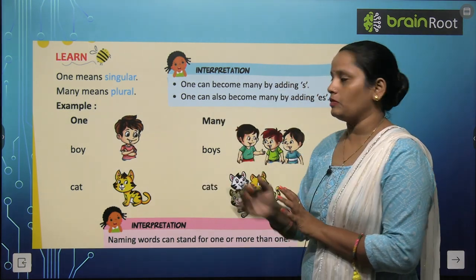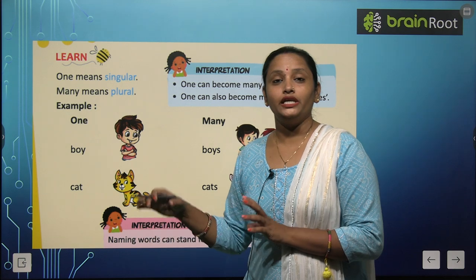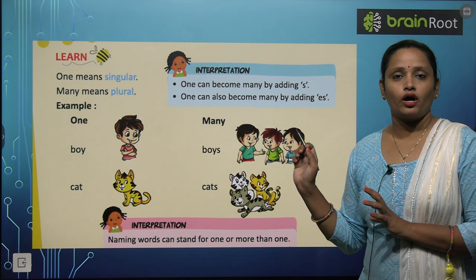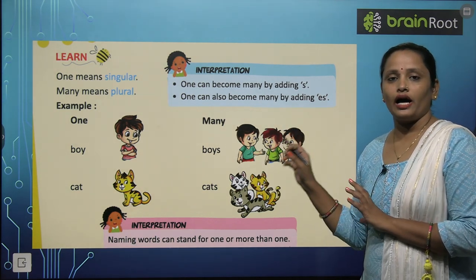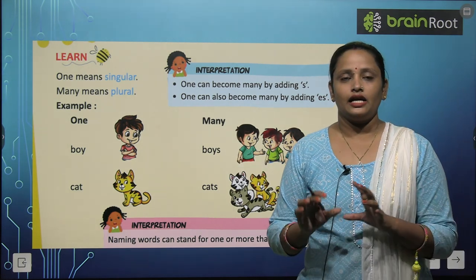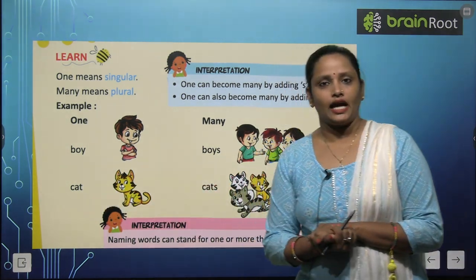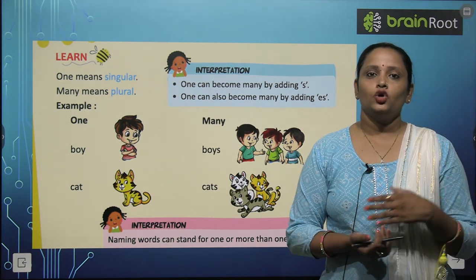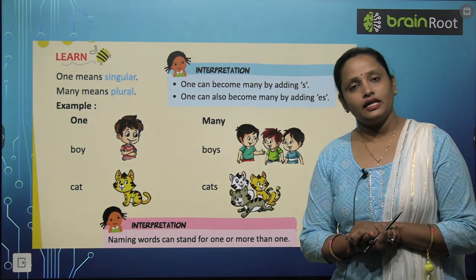One and many: toh yahan pe one boy hai, aur bhoat saare hain toh yahan pe boys hai. Boy mein S laga ke one ka many bana diya. Similarly, C-A-T — cat. Bhoat saari cat hain toh cat mein S laga denge, aur yye ban jayega cats.